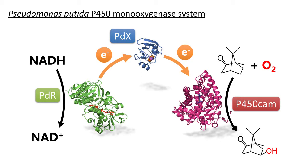For example, a well-known P450 from Pseudomonas putida, usually called P450cam, catalyzes the hydroxylation of camphor in the presence of putidaredoxin PDX and putidaredoxin reductase PDR. This means PDR reduces PDX, and then the reduced PDX donates electrons to P450cam.